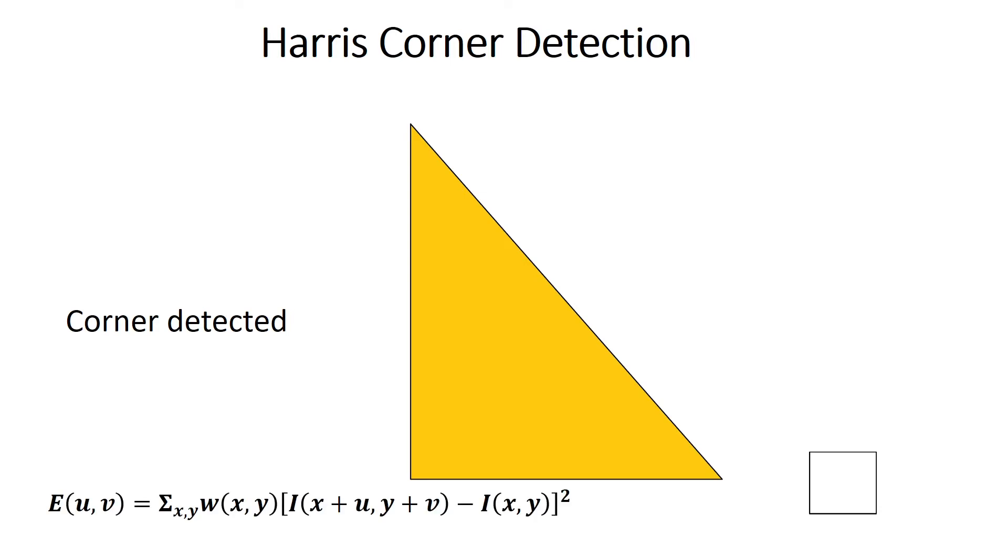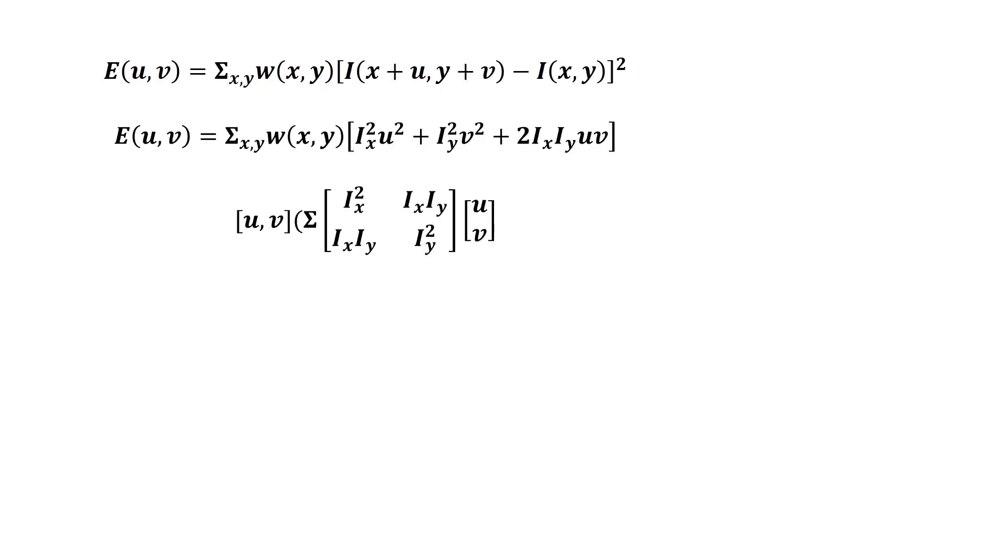And this is the equation of Harris Corner Detection. You can see it's very complex to actually calculate the result of this formula. So by reducing the time usage of calculation, there are two tricks to calculate. One is to expand the formula into the second line here.